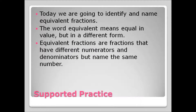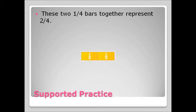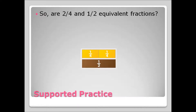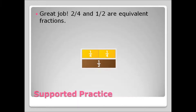That's because one-third and two-sixths are equivalent fractions. Today we are going to identify and name equivalent fractions. The word equivalent means equal in value but in a different form. Equivalent fractions are fractions that have different numerators and denominators but name the same number. These two one-fourth bars together represent two-fourths, and together they are the same length as the one-half bar. So two-fourths and one-half are equivalent fractions.